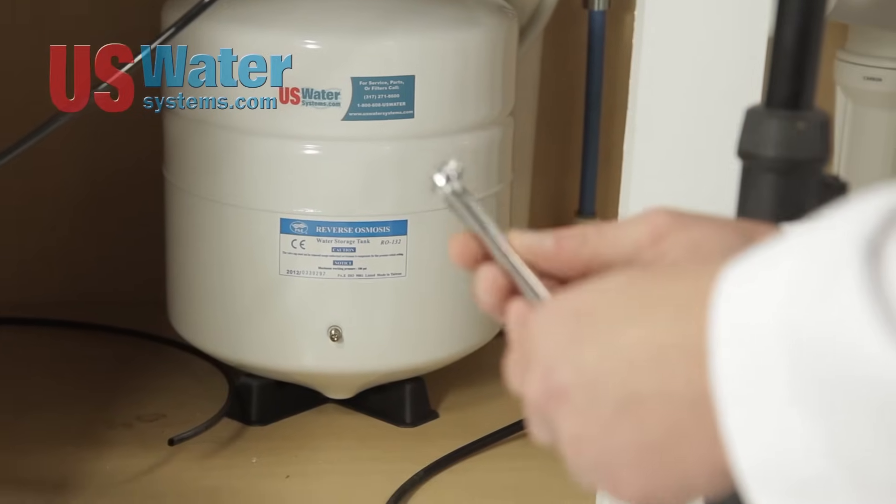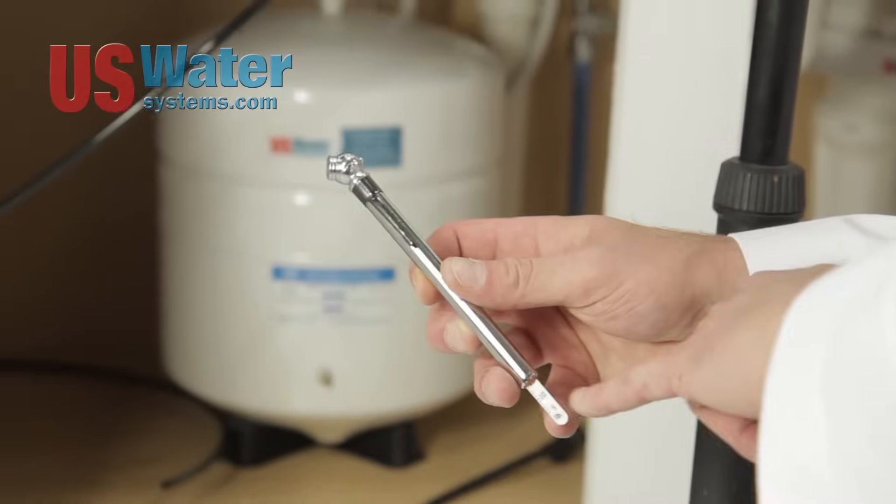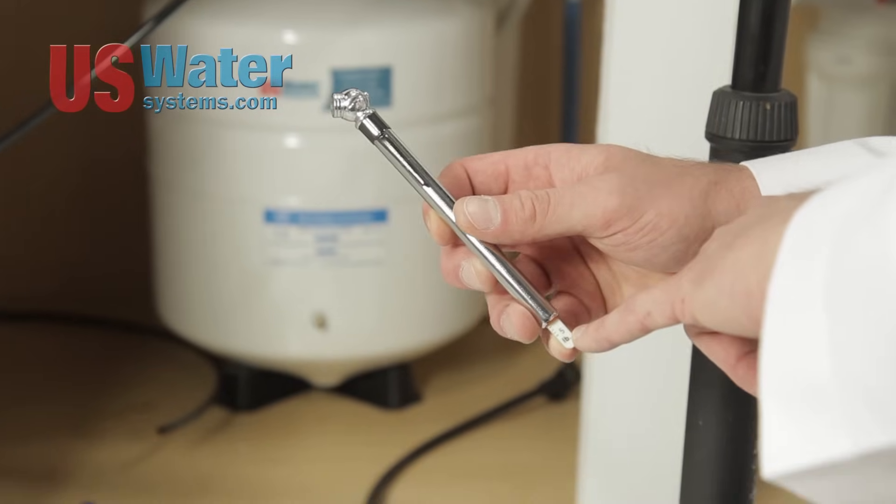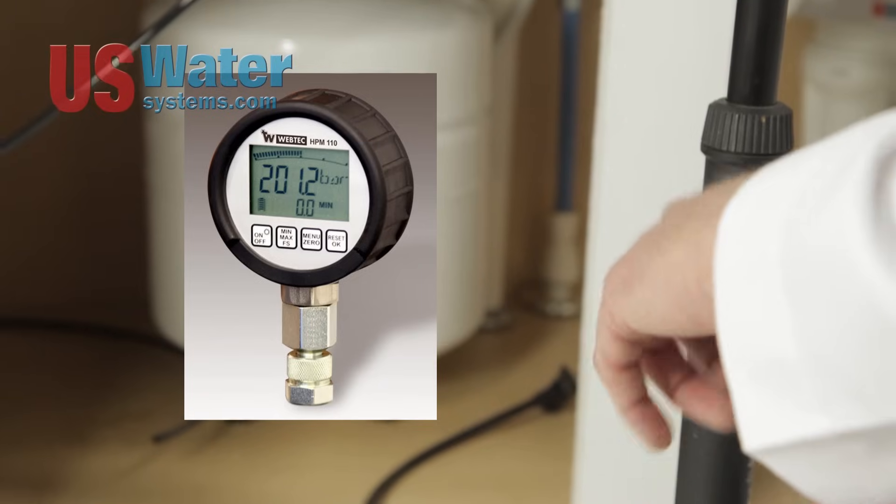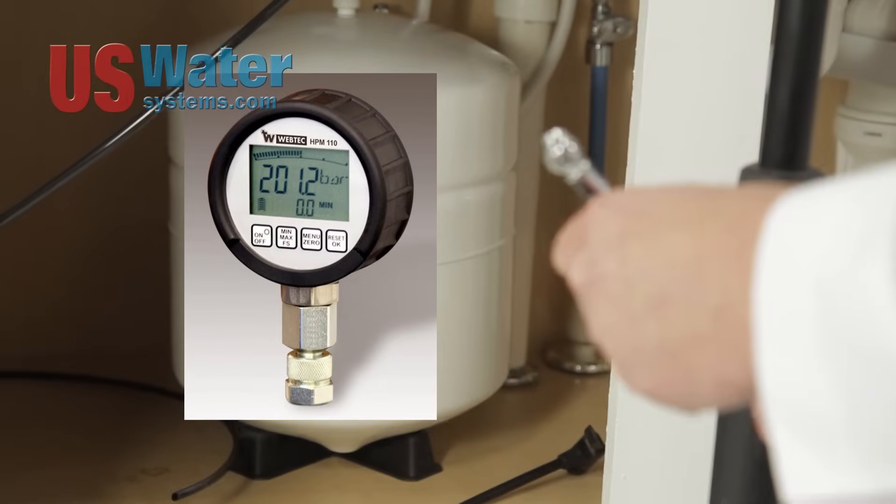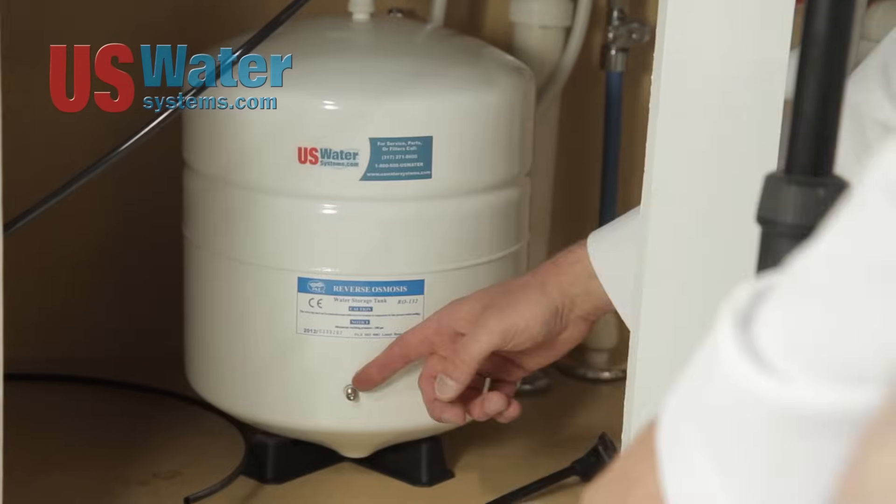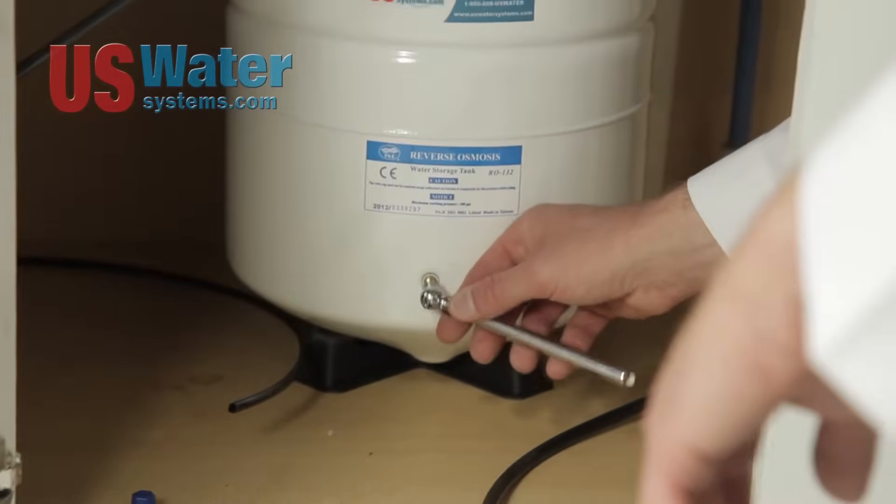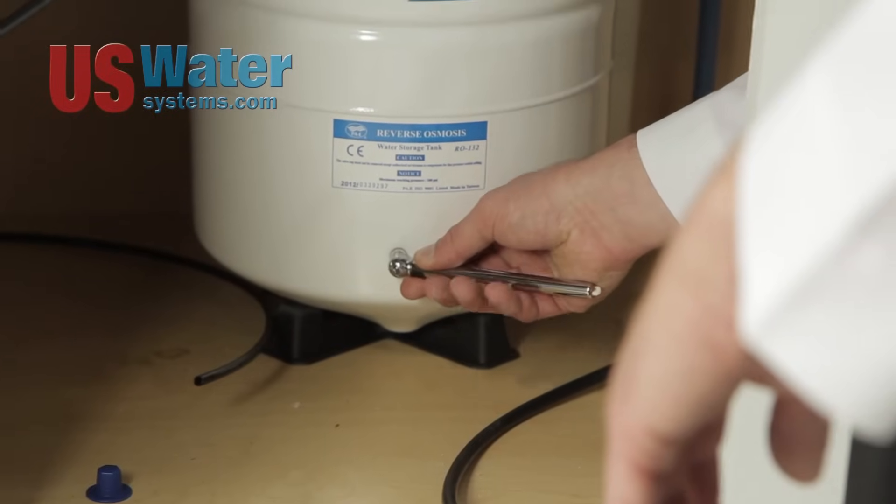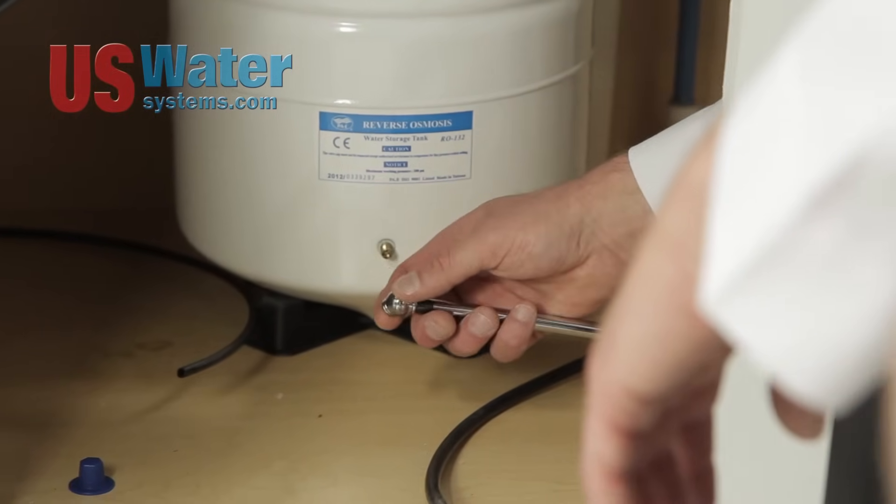You'll want to have a tire pressure gauge. You can use a standard one like this. This one measures in five pound increments. You can also get a digital tire pressure gauge. They're fairly inexpensive and pretty accurate. After you've pressurized your tank you'll want to hook your tire pressure gauge to the Schrader valve just for a minute, just like checking tire pressure.